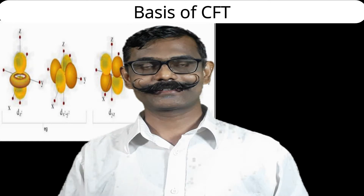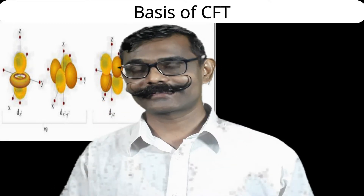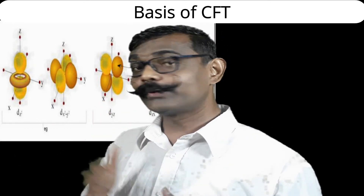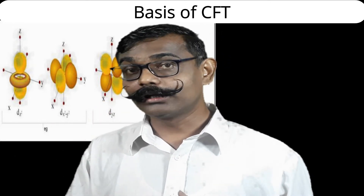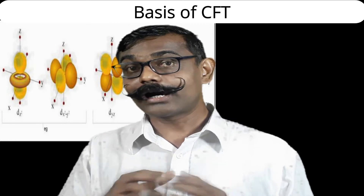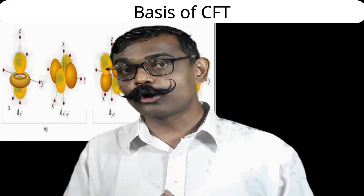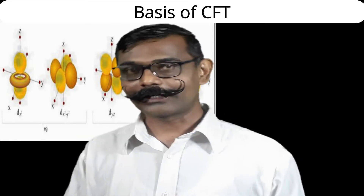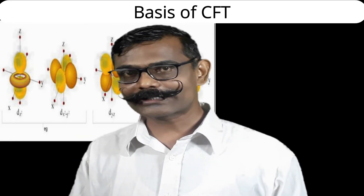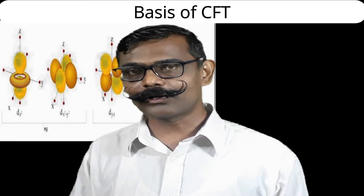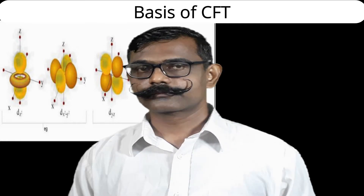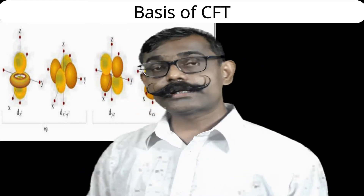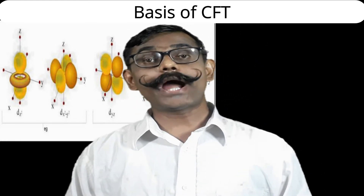The second orbital, dx²-y², has its lobes perfectly along the x and y axes. Two opposite lobes are yellow and the other two opposite lobes are brown.